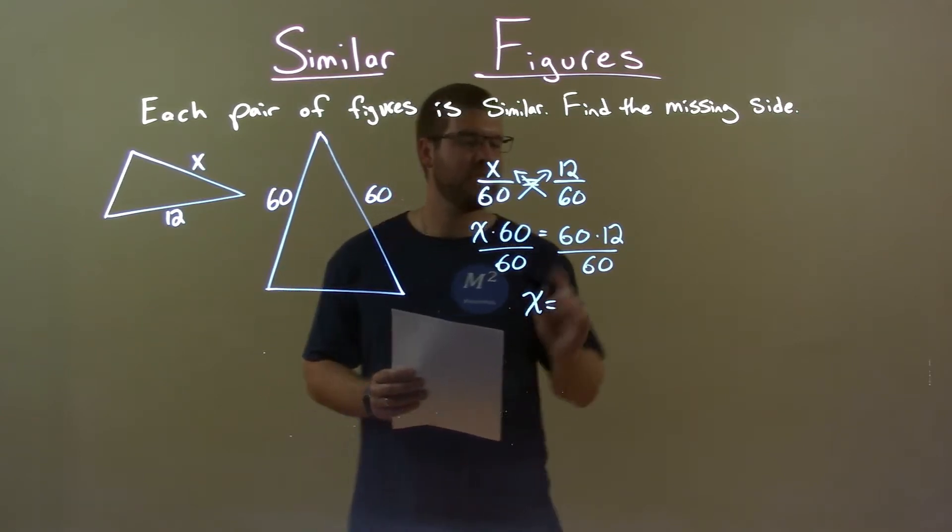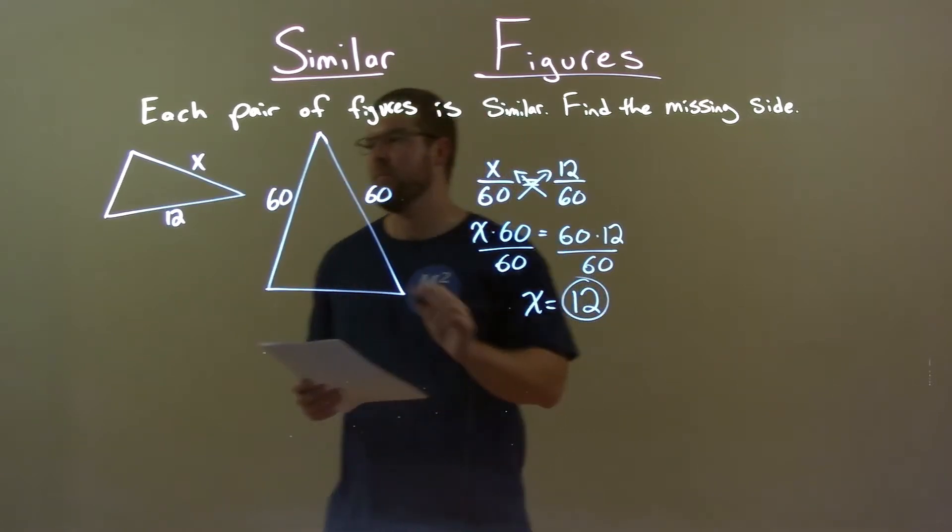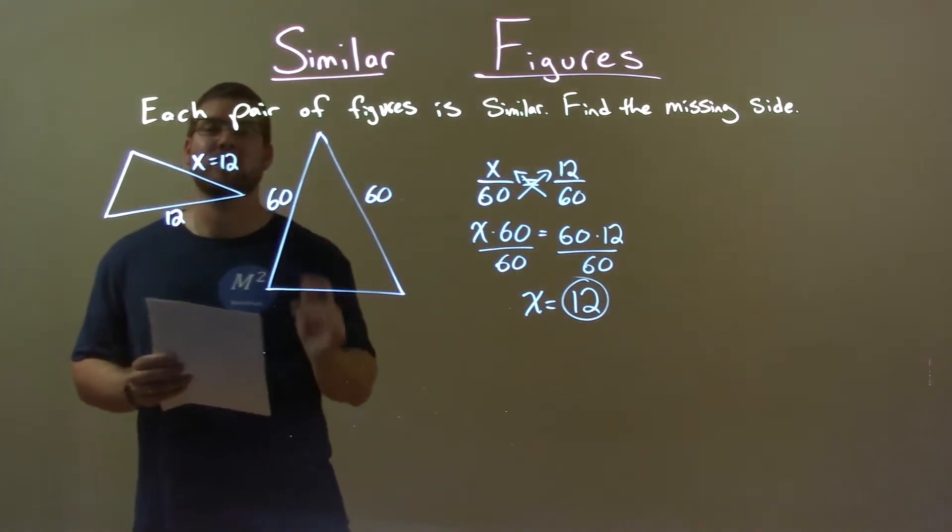We have X by itself, and 60 times 12 divided by 60, right, is just 12. And so, our missing side length here is 12.